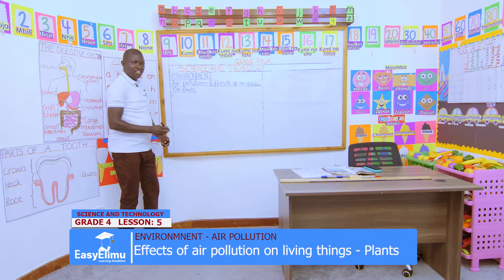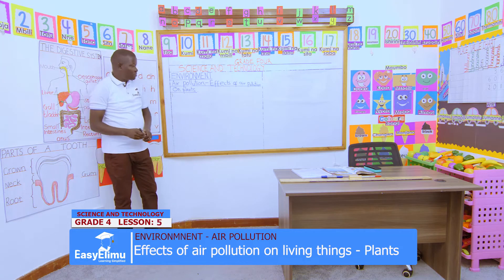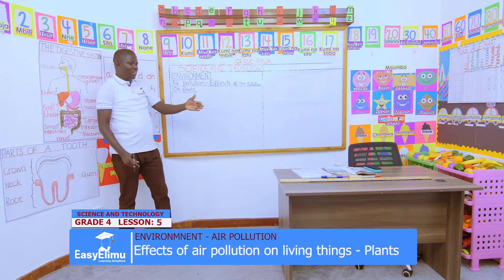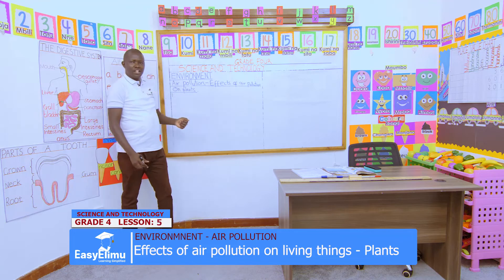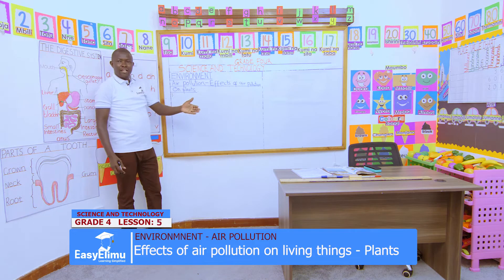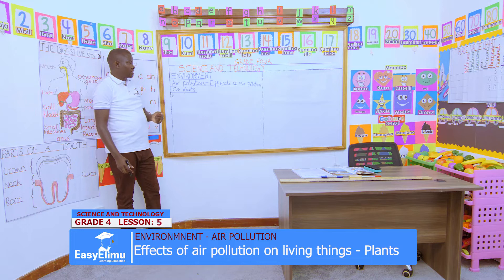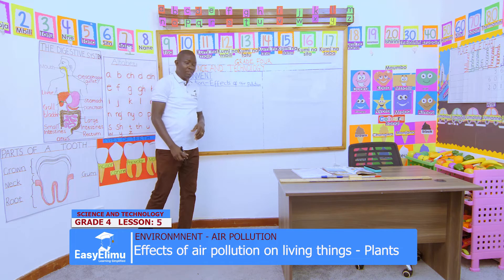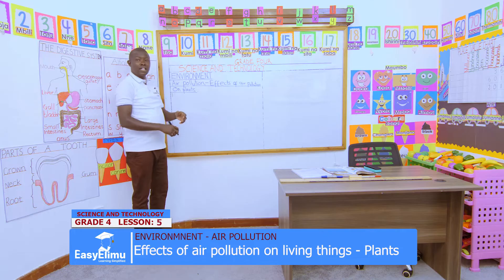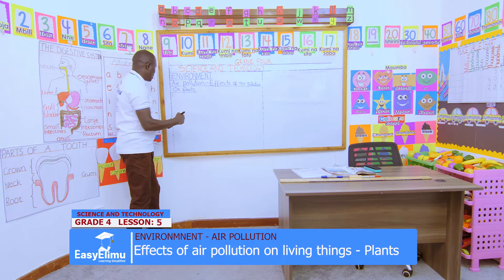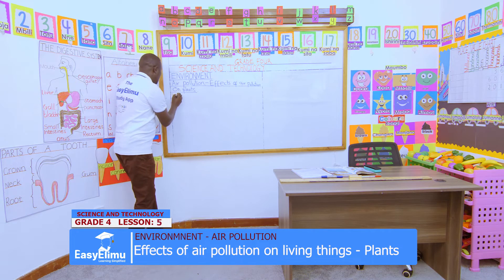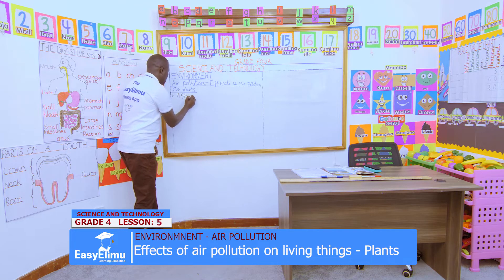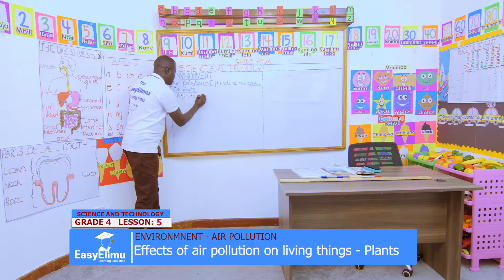Number one, John, what have you discussed? From the picture we have seen, dust settled on top of leaves affects the leaves — we can't even know the color of the leaf. So, number one effect is that air pollution affects photosynthesis.